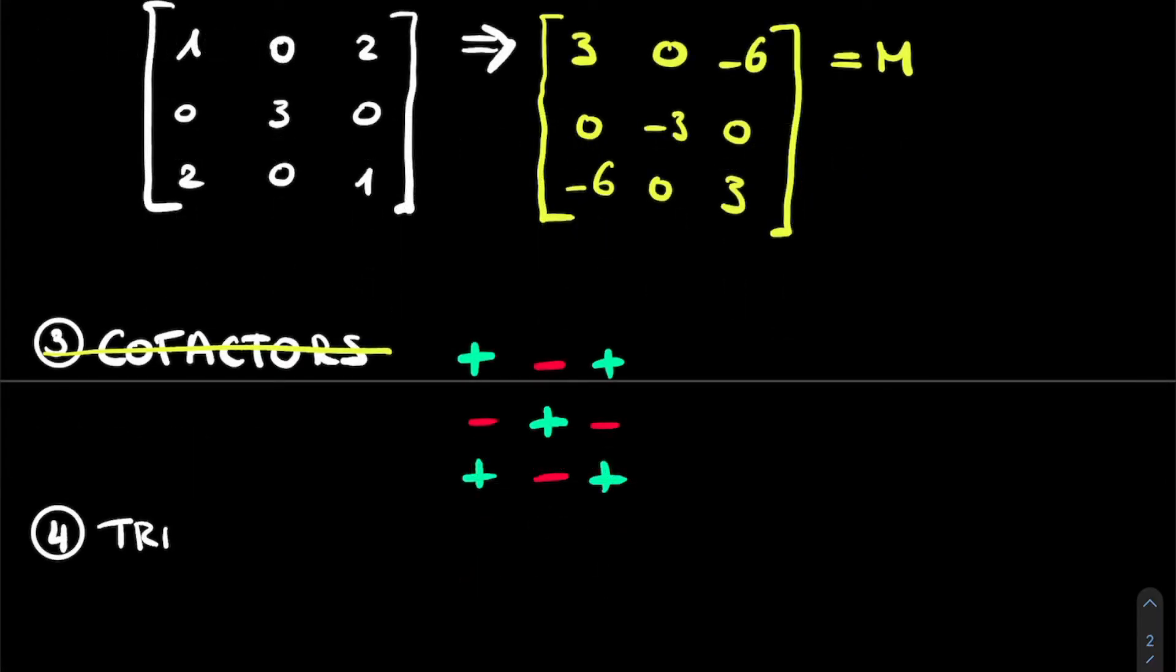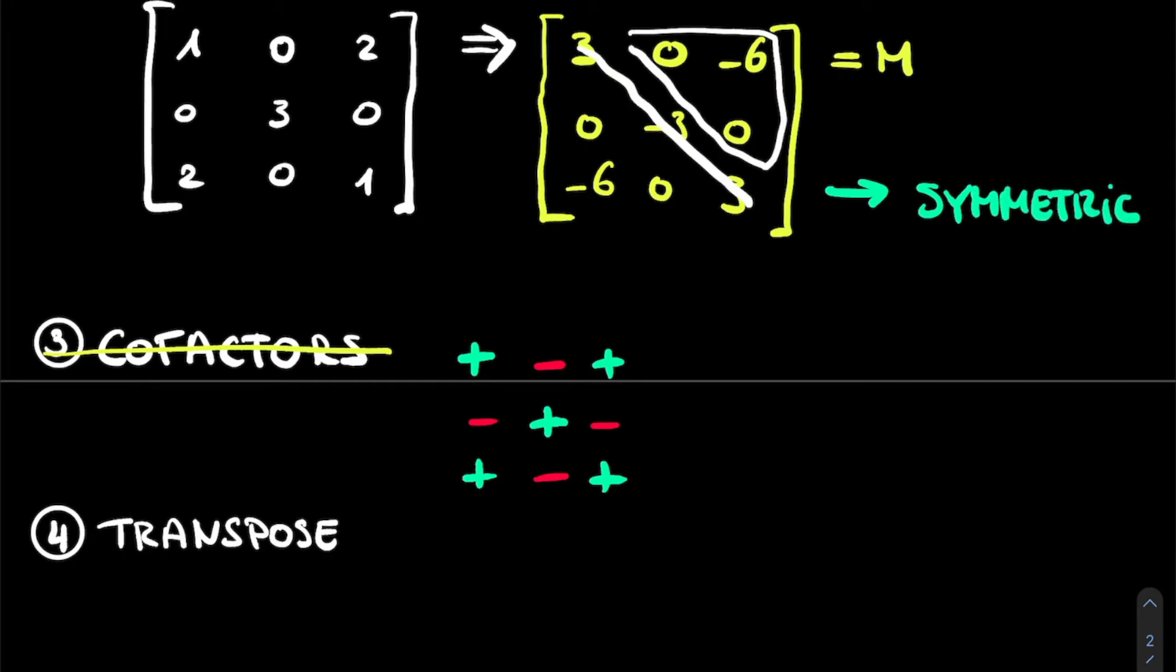The next step in our process is to transpose this matrix, meaning that we have to swap the rows and columns of our matrix. However, also here we see that our matrix M is actually symmetric, which means that the elements on either side of the diagonal are equal to each other, zeros and a minus 6. Thus, swapping the rows and columns doesn't change anything. So we can also skip this step.